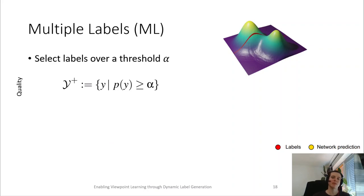First, let's take a look at the multiple label approach. Again, let's consider the view quality distribution. Now, we set a quality threshold alpha and choose every label which is above the quality threshold as a potential label during training. For example, if we choose a rather high quality threshold alpha, we might find the two labels we saw before. Now, during training, we evaluate the network, again visualized in yellow.